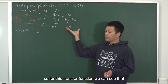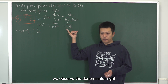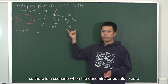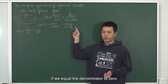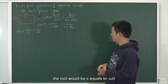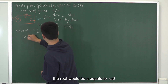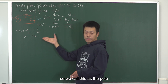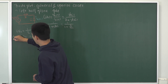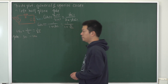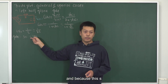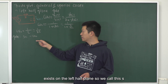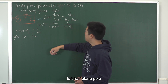For this transfer function, we observe the denominator. There is a scenario when the denominator equals zero. Setting the denominator to zero, we calculate the root: S equals minus omega_0. We call this the pole. Because this S exists on the left half-plane, we call it a left half-plane pole.